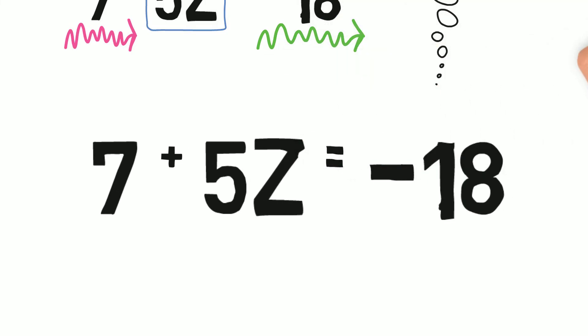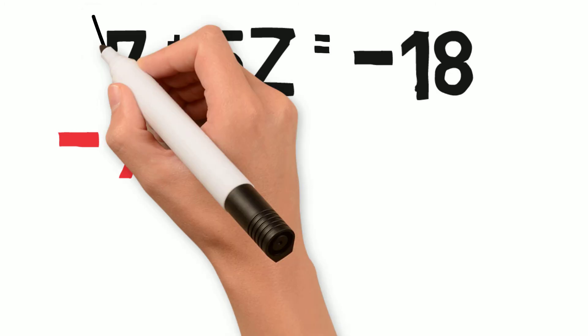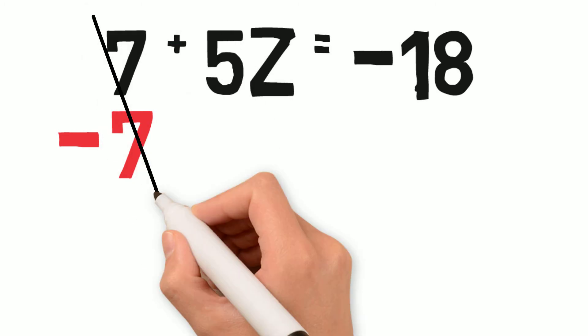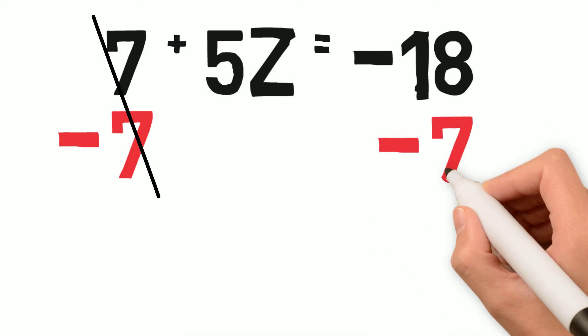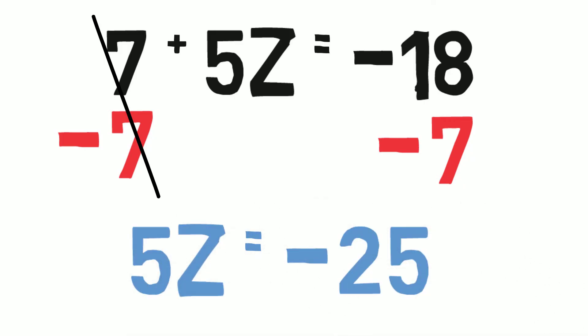Looking back in my original equation, I have 7 plus 5z equals negative 18. I took 7 away from one side, which created a 0 pair. Then, I took 7 away from the other side. This leaves me with negative 25 equals 5z.